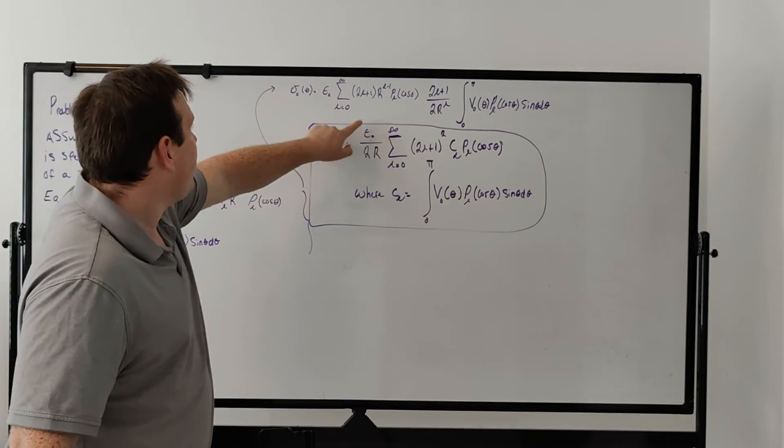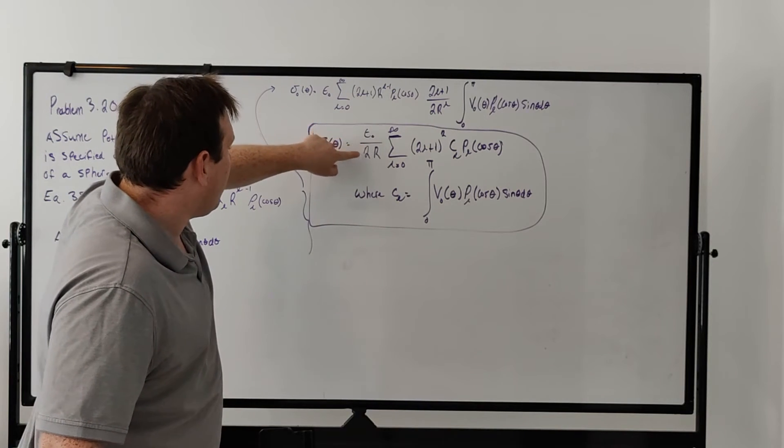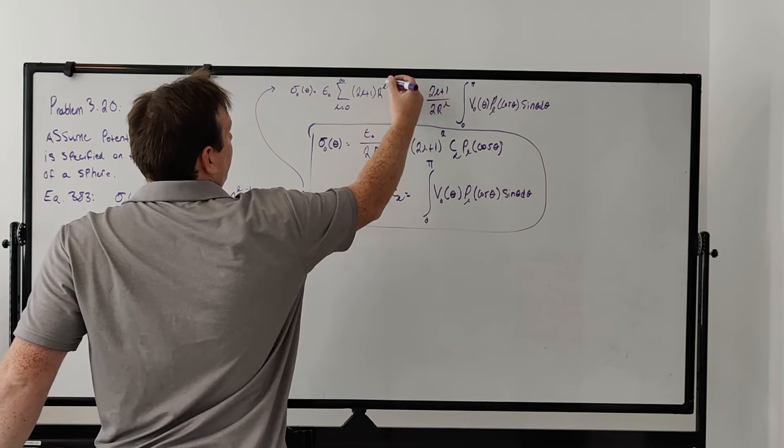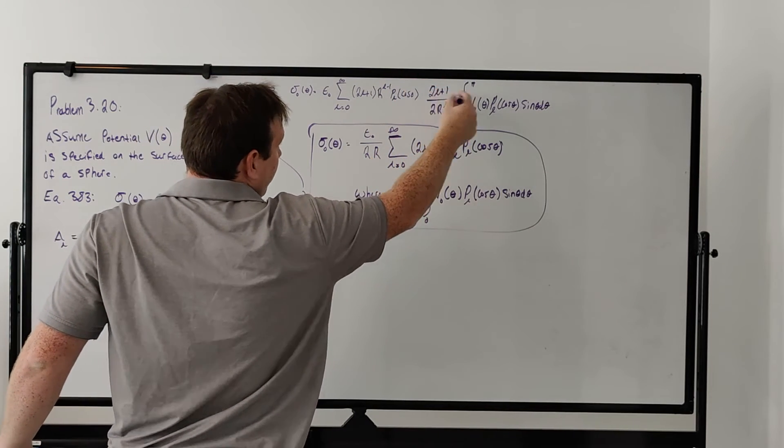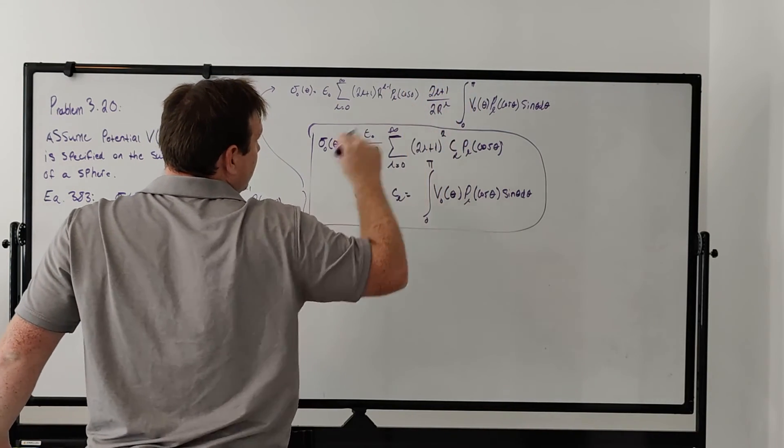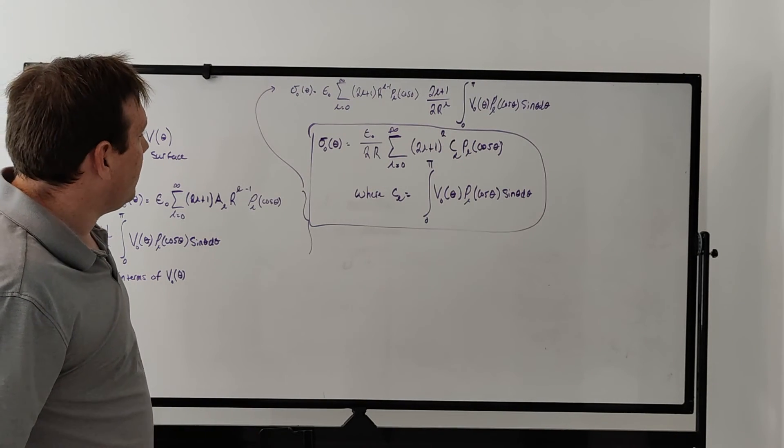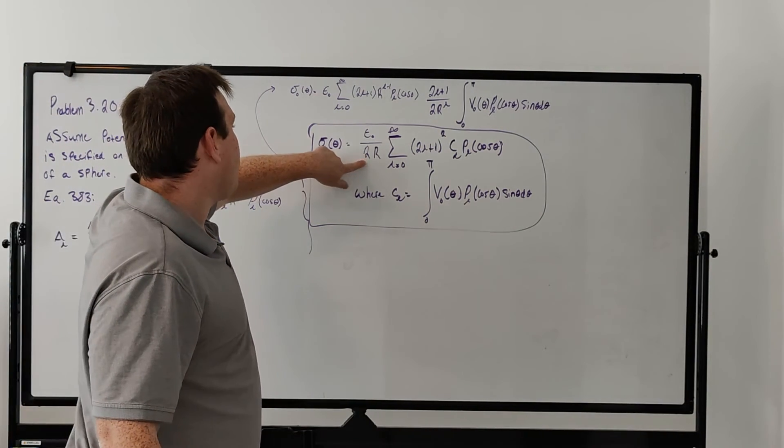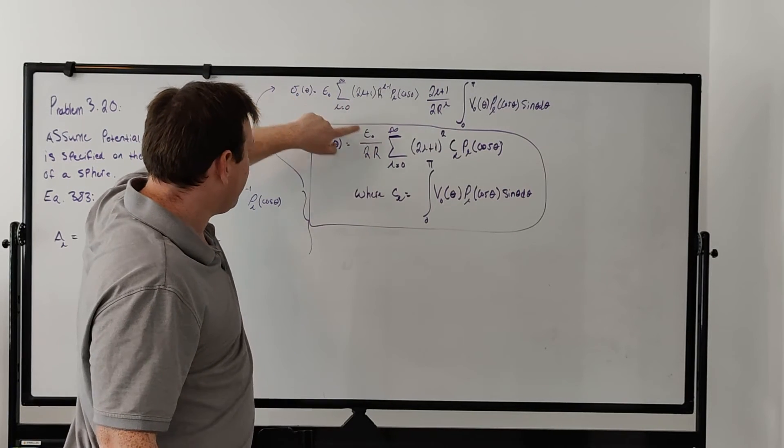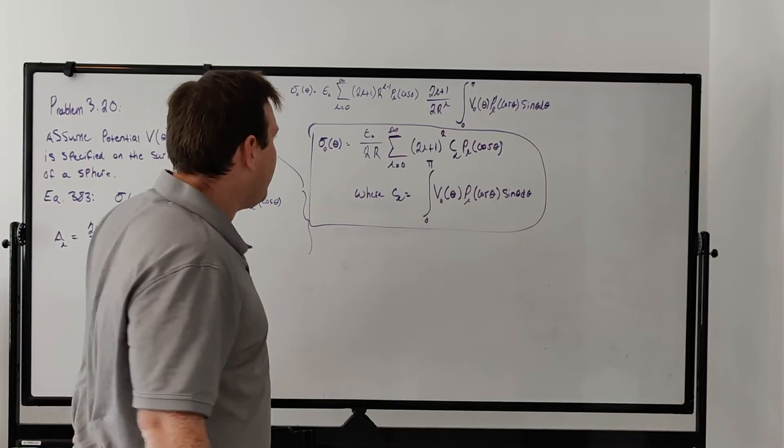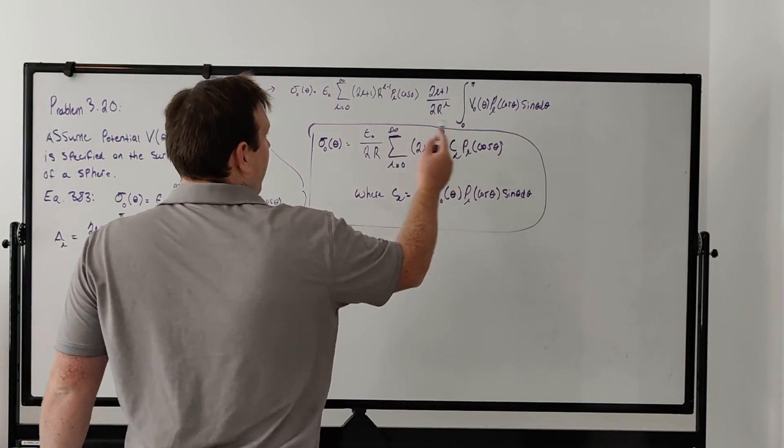We pull out the ε₀ and pull out 1/(2R). R^(L-1) over R^L is just R^(-1), so that's why we can pull out the R. We have the summation again, then we have 2L+1 times 2L+1, so that's (2L+1)².